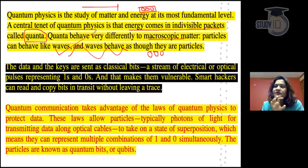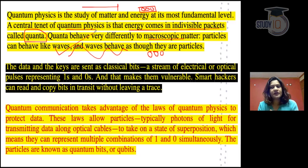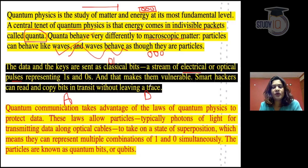Traditionally, we send data in classical bits, 0 and 1. We use electrical or optical pulses and convert data into 0 and 1. For example, if you are A and I am B and you have to send data, you will encrypt it first. In the encryption, you convert it to 0 and 1, then send it through an electrical or optical pulse.